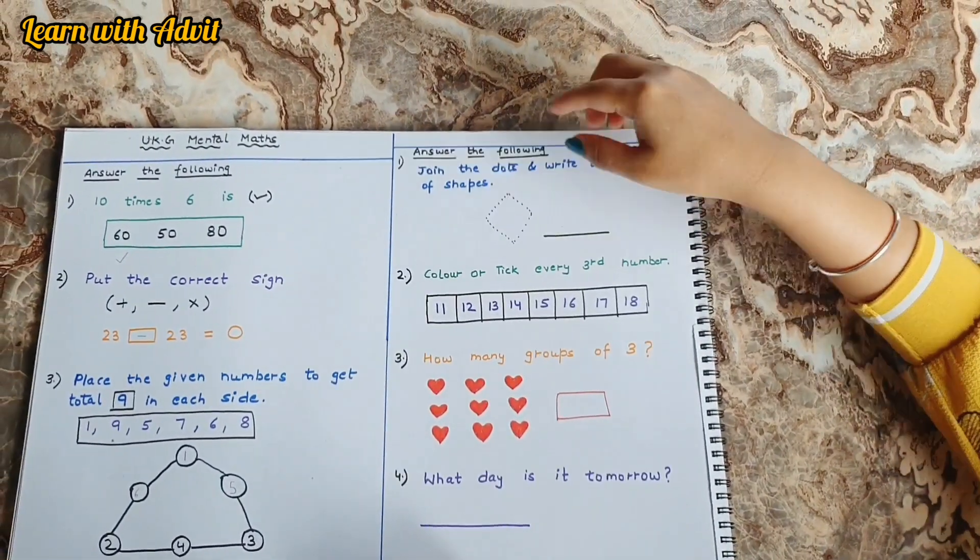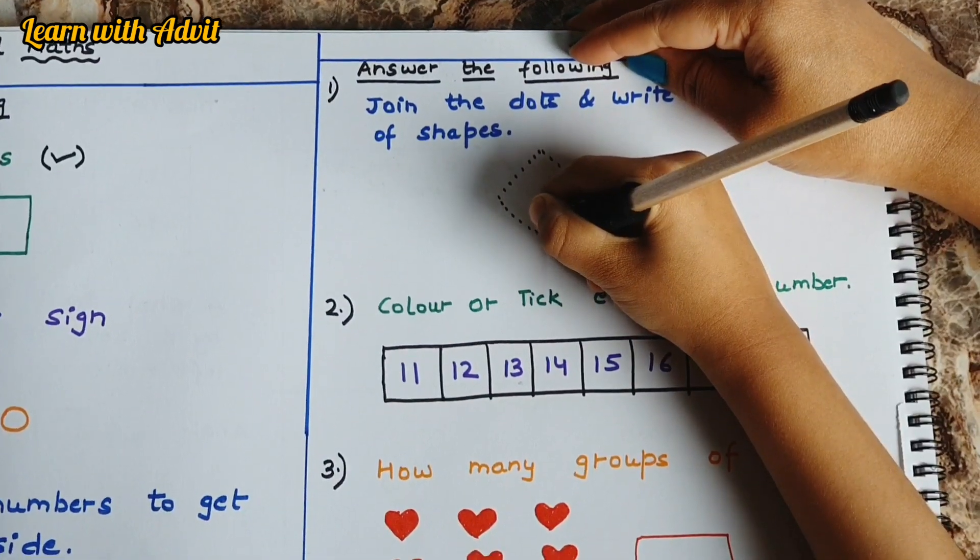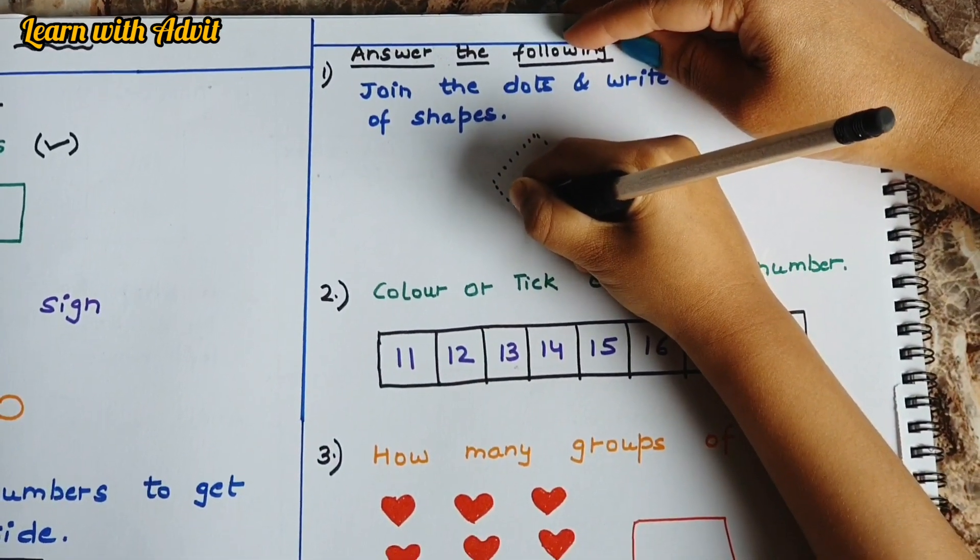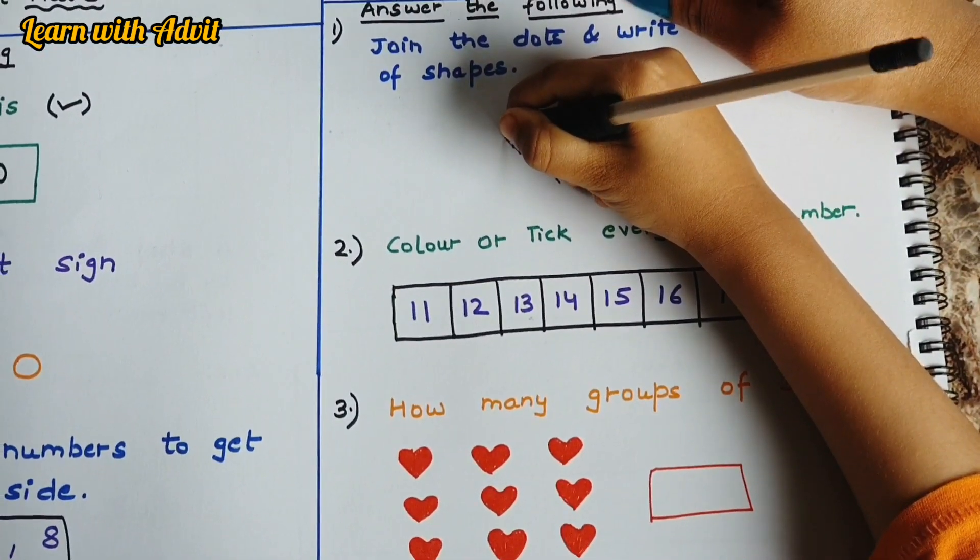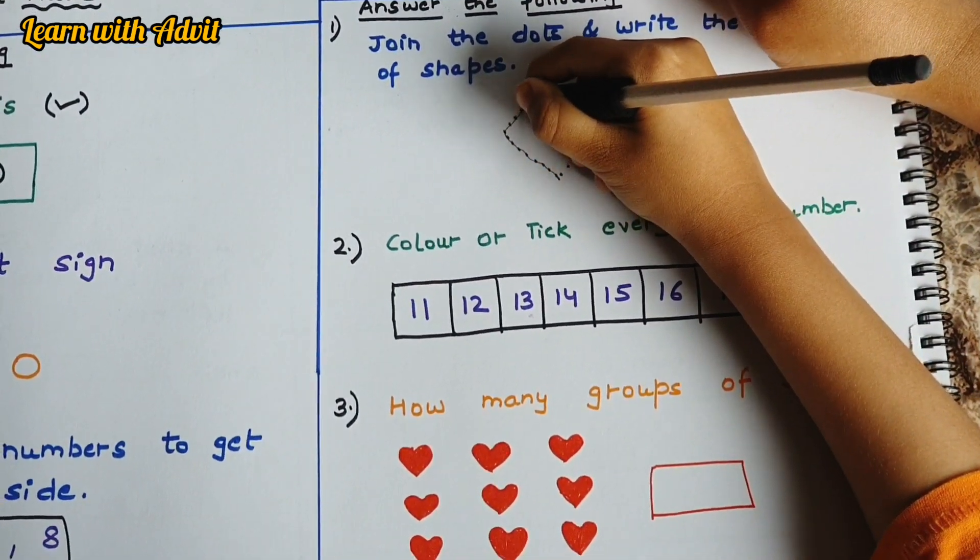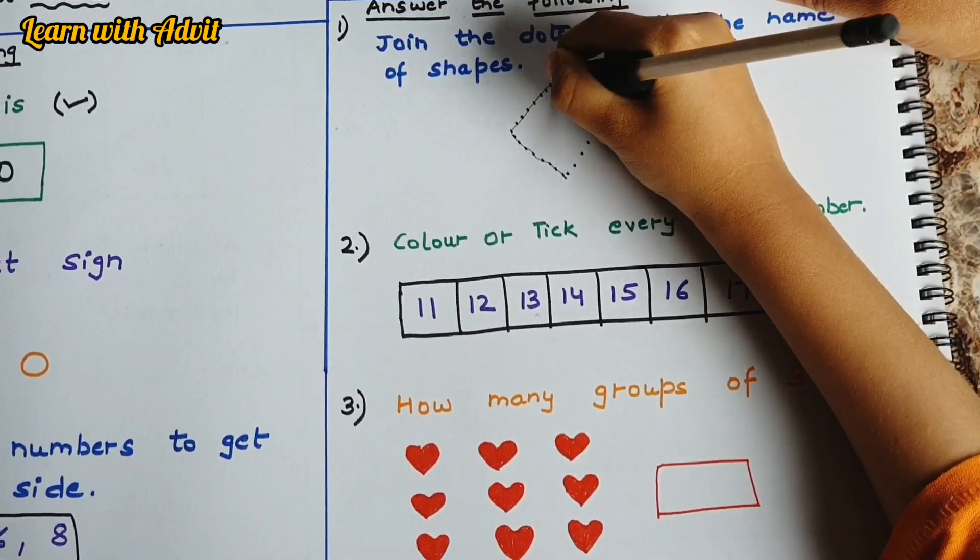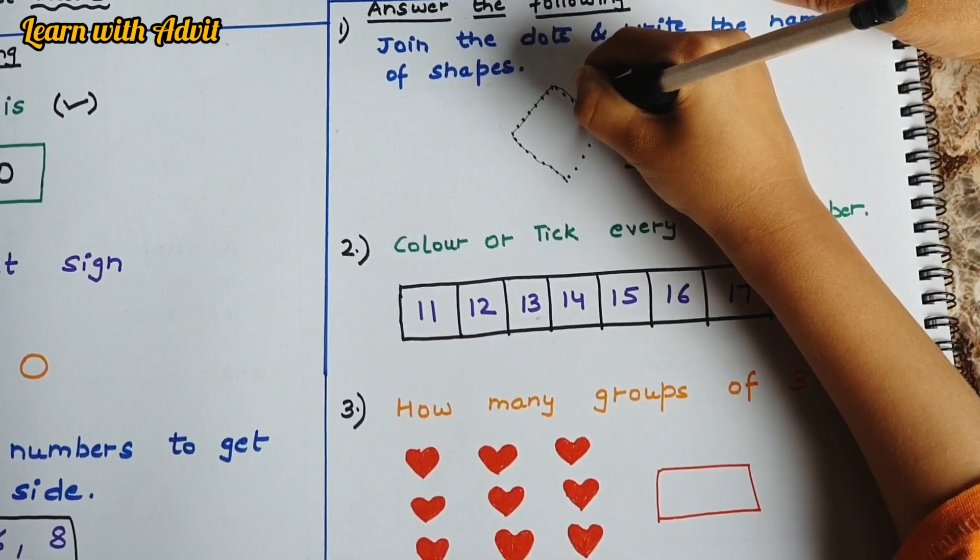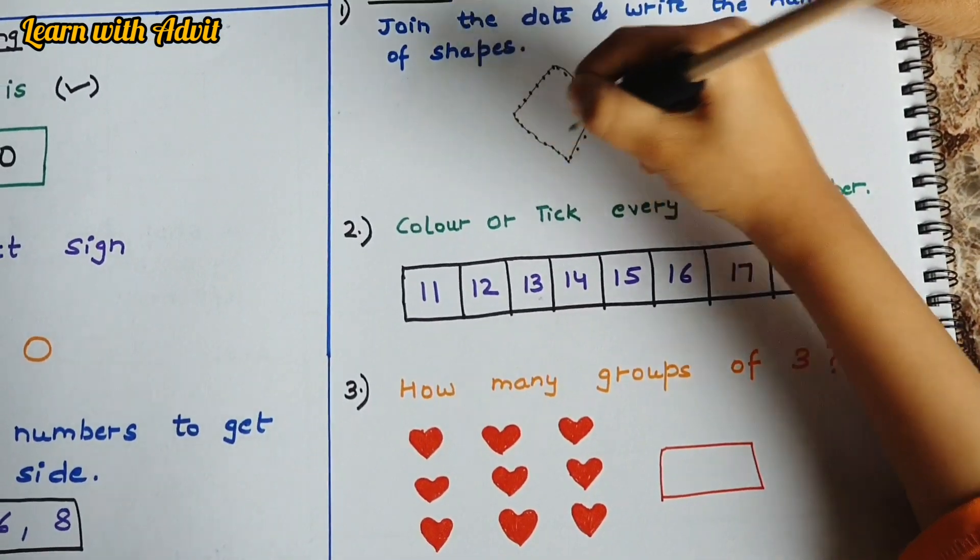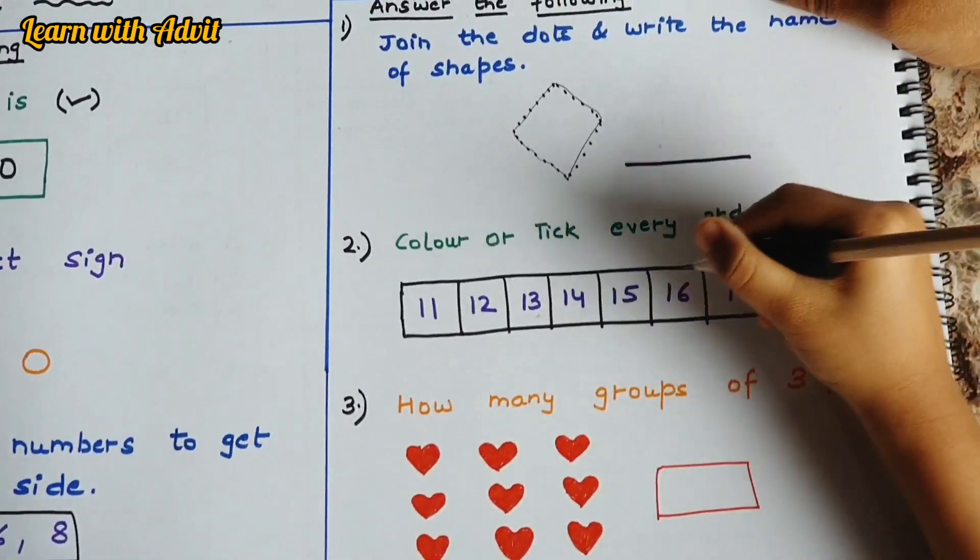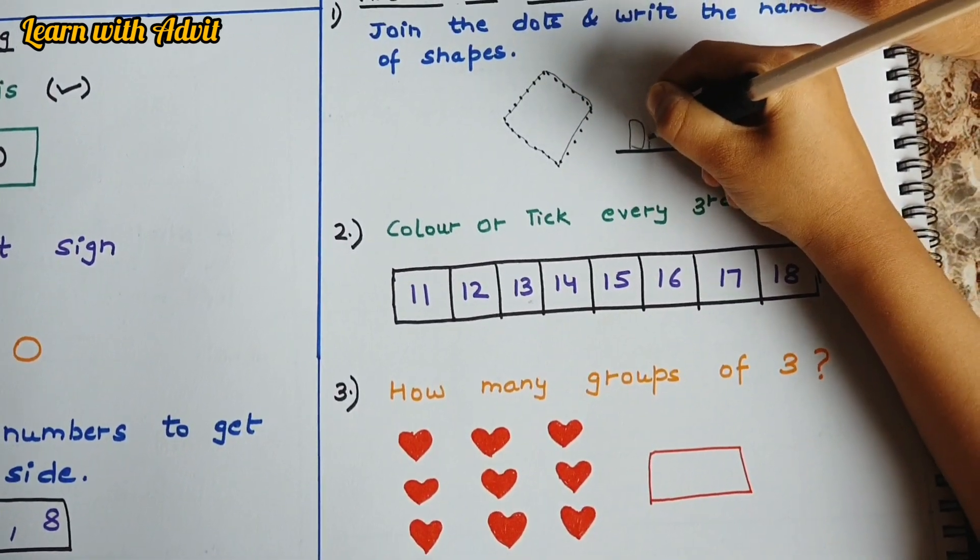Join the dots and write the name of the shape. Come on, join the dots. I am going to do it very carefully and do it a little fast also. Yes, I am going to do these two sides. What shape is this? We have to find what shape it is. It's a diamond, right? Spell and write.